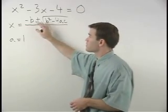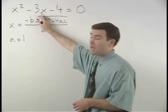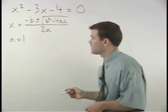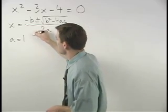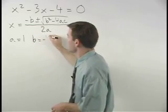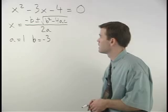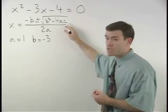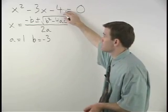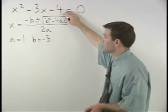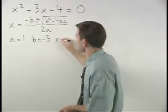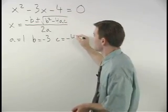The value for b comes from the coefficient on the x term, which in this case is negative 3. So we say that b equals negative 3. And the value for c comes from the constant term, which in this case is negative 4. So we say c equals negative 4.